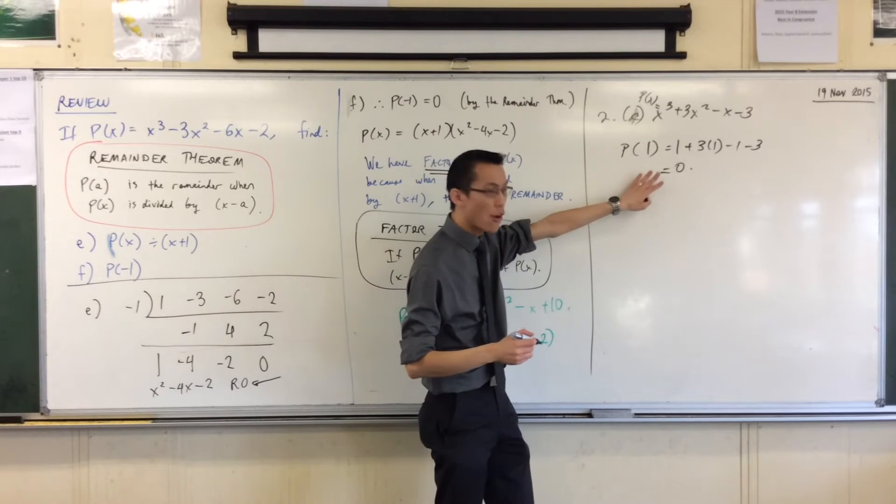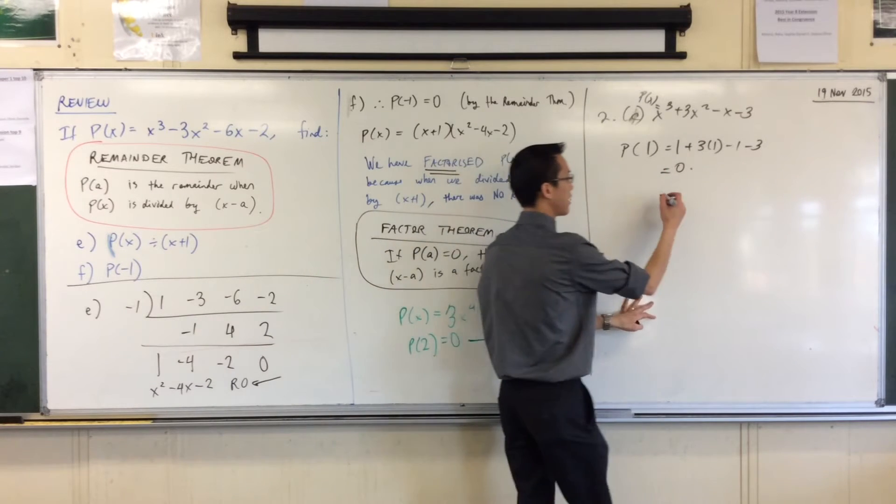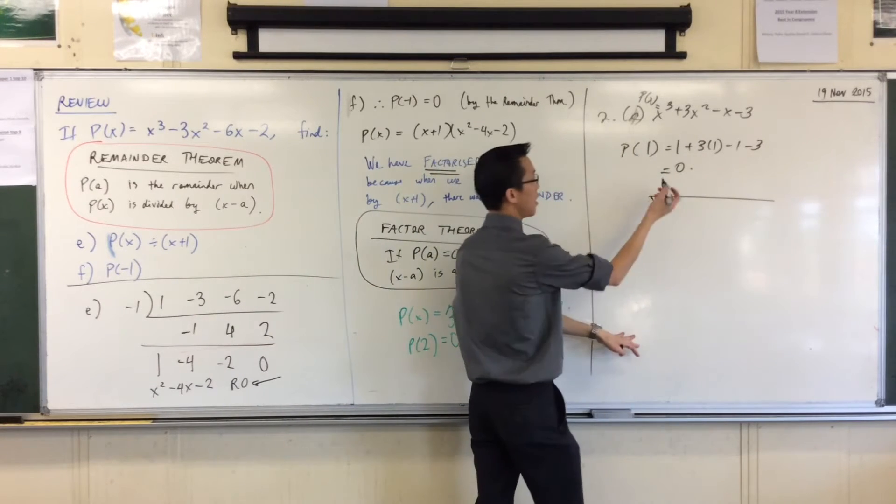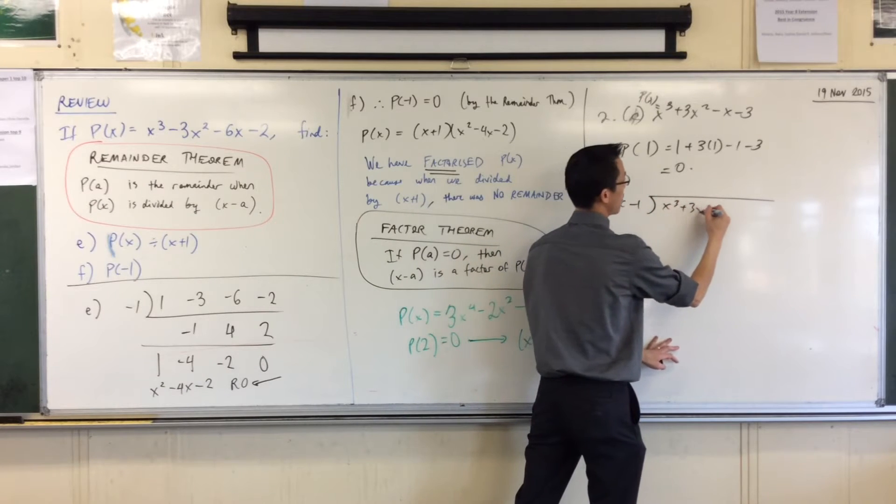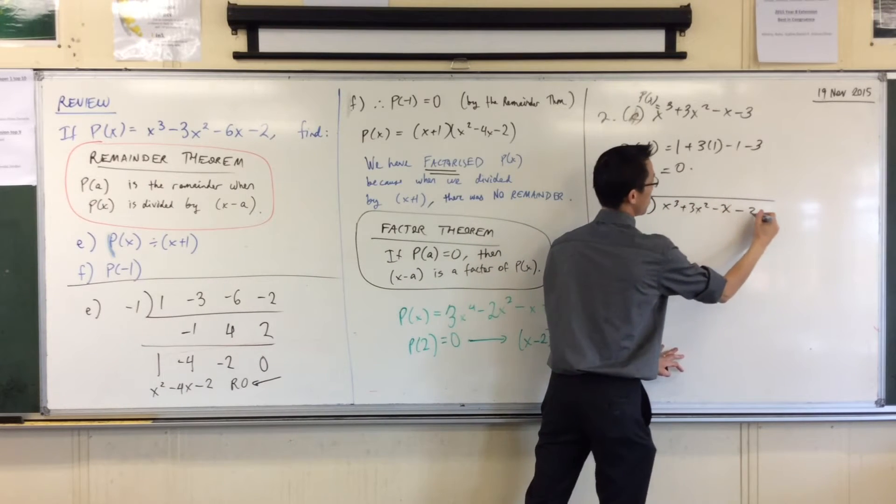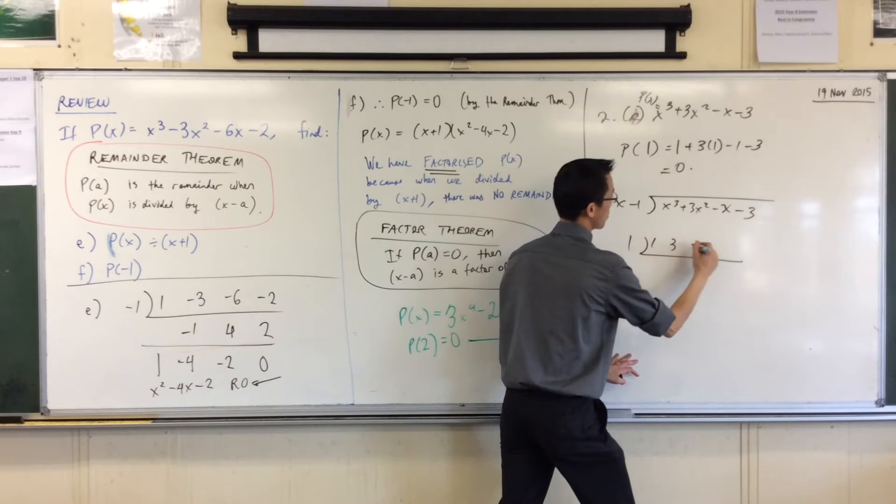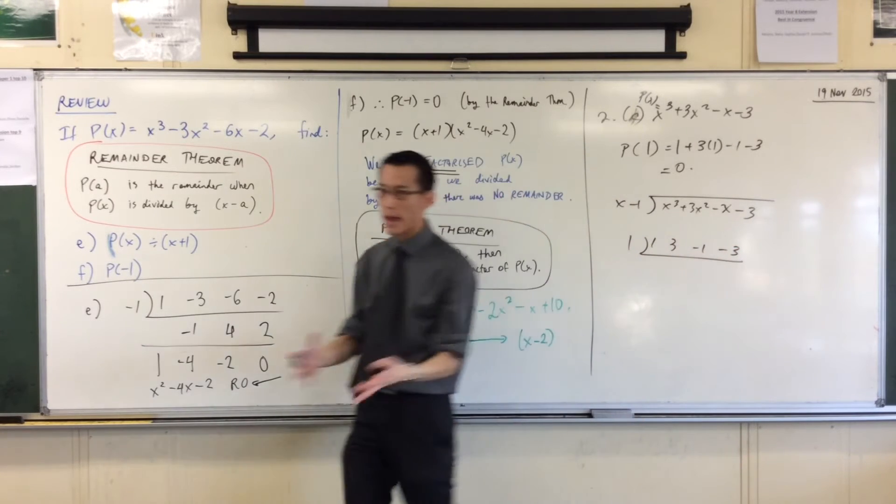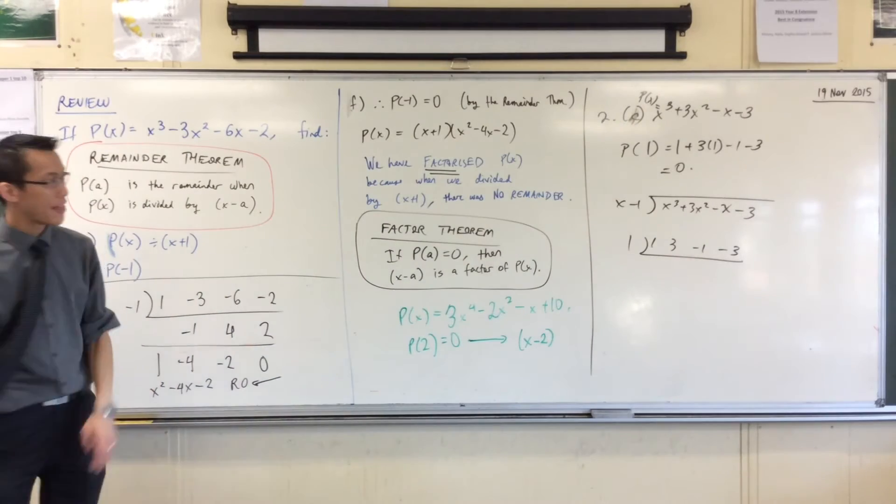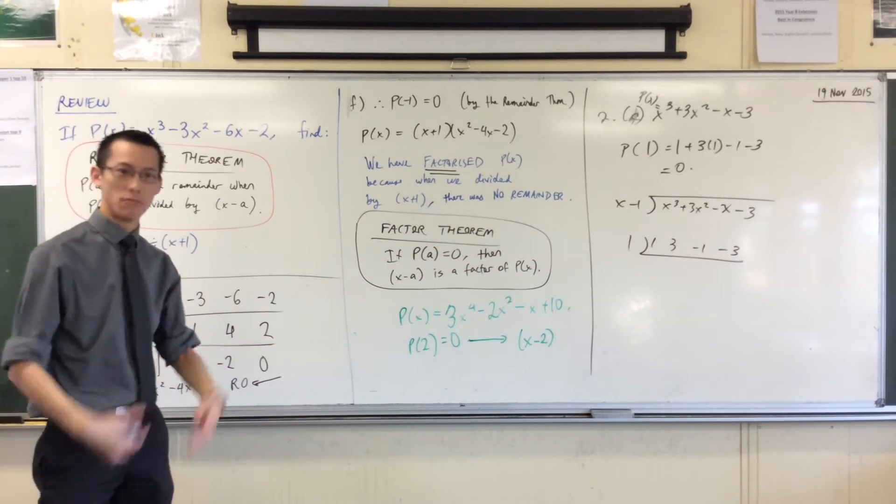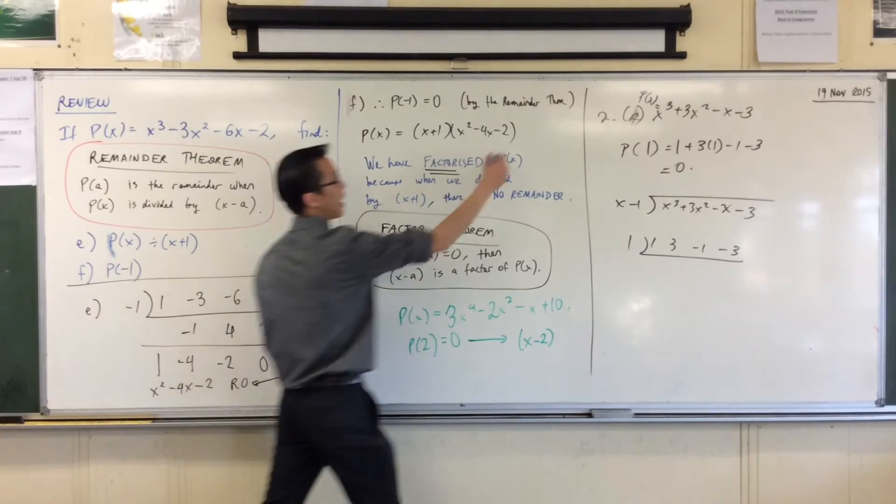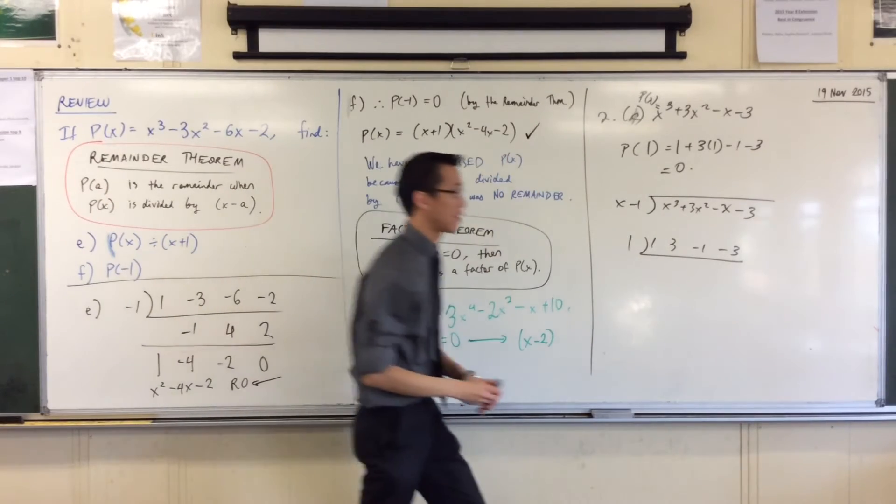So what I want you to do is actually now that we know this is a factorization, I'd like you to go ahead and do this. You can either choose to do it this way, or you can choose to do it this way. I want you to go ahead, do the division, and then off the basis of what we just found, give me the actual factorization, just like I have here. Go ahead and give that a go.